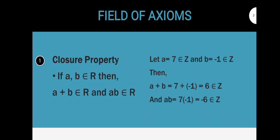First is the closure property. Closure property states that if A and B are an element of real numbers, then its sum and its product will also be an element of the real numbers. For example, we let A be equal to 7 and B be equal to negative 1, which are both an element of the set of integers. Then, its sum will be equal to 6, which is also an element of the set of integers, and its product will be equal to negative 6, which is also an element of the set of integers.